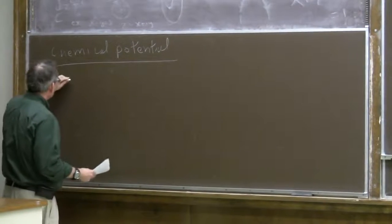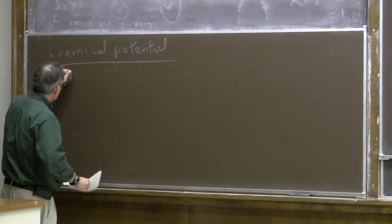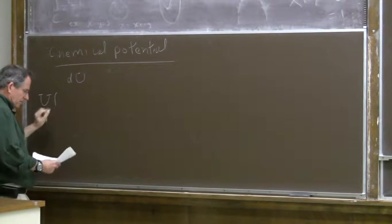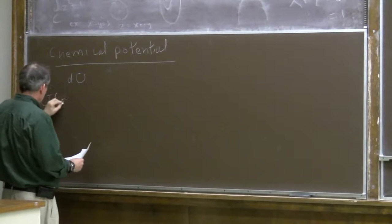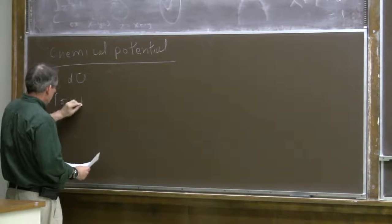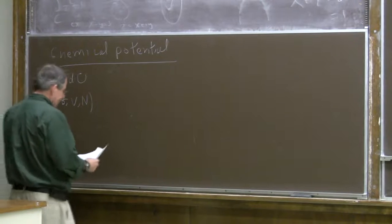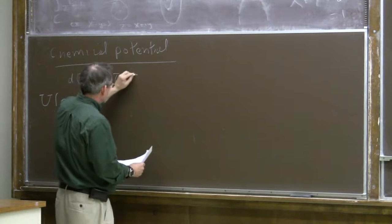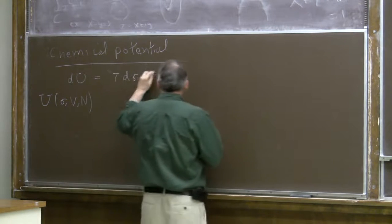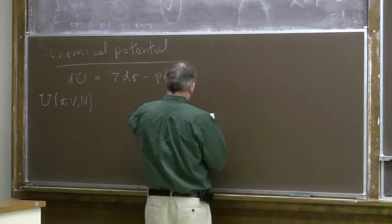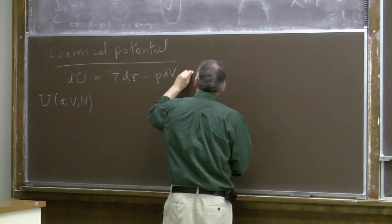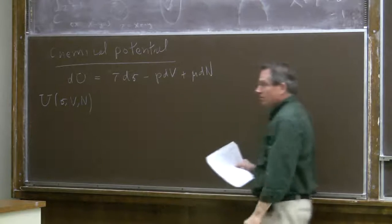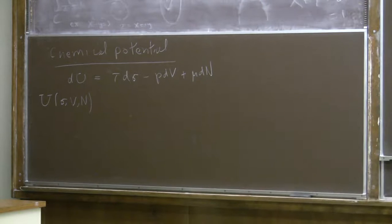We saw we can generalize the thermodynamic identity if we consider the internal energy to be a function of entropy, volume, and particle number. We can write dU = τ dσ - p dV, what we had before, plus the term involving flow of particles, μ dN.